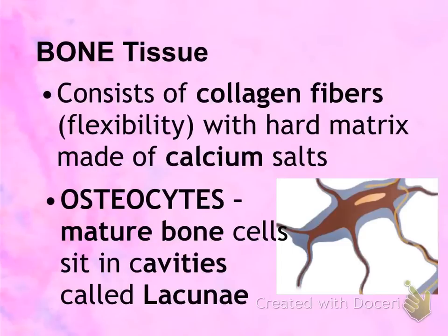In the picture on the right, the structure in brown is the osteocyte with the cream-colored nuclei, and the lacunae is in the gray. So the lacunae is the space, and the osteocyte is the cell that lives inside it.